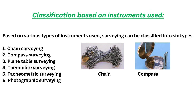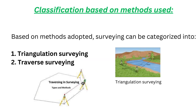Based on various types of instruments used, surveying can be classified into six types: Number 1. Chain Surveying, Number 2. Compass Surveying, Number 3. Plain Table Surveying, Number 4. Theodolite Surveying, Number 5. Tachometric Surveying, Number 6. Photographic Surveying.